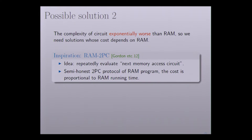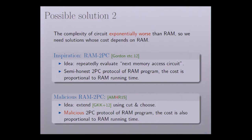Our inspiration is from the RAM two-party computation from the paper by Goldwasser and others, 2012. The idea is to repeatedly evaluate the next memory access circuit. It is a semi-honest 2PC protocol of a RAM program, and the cost is proportional to the RAM program. To achieve malicious security, we adopt another paper, AMHR 2015, which extends the GKK protocol using cut-and-choose. It is a malicious 2PC protocol of a RAM program, and the cost is also proportional to the RAM program.